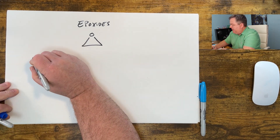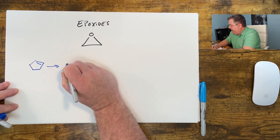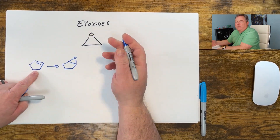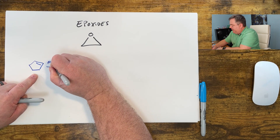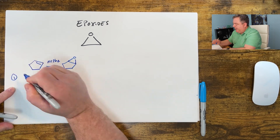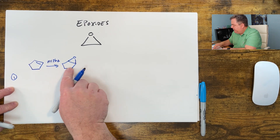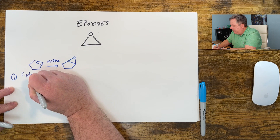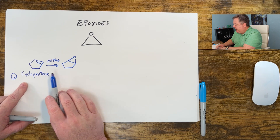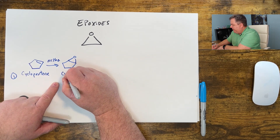One way to name them is to think about the double bond compound used to make epoxides. We can take an alkene and MCPBA and turn that into an epoxide. So one way — maybe the more technical way — is to take the alkene used to make the epoxide. This is cyclopentene; take the alkene and write the word oxide on the end, so this is cyclopentene oxide.